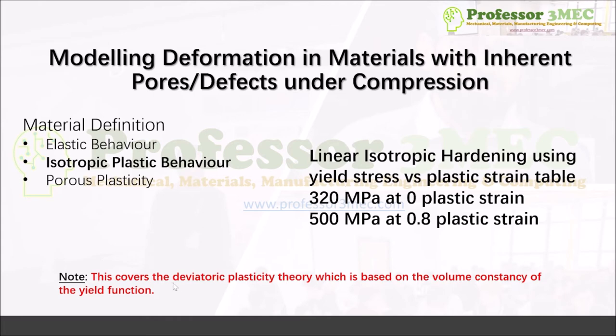Remember, this only covers the deviatoric plasticity — von Mises plasticity theory. This is based on the assumption that the matrix material has no plasticity under volumetric loading. If you put a cube in a hydrostatic state — like throwing it into deep water — no matter how high the pressure, it can never yield. That is the core assumption of deviatoric plasticity theory.